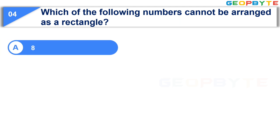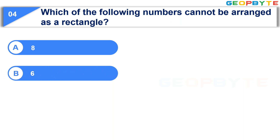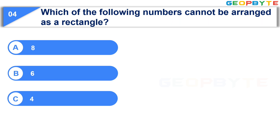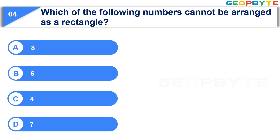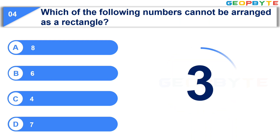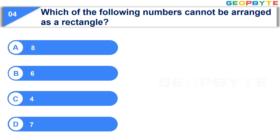Which of the following numbers cannot be arranged as a rectangle? Option A: 8. Option B: 6. Option C: 4. Option D: 7. Your time starts now. Your time is up and the correct answer is Option D: 7.